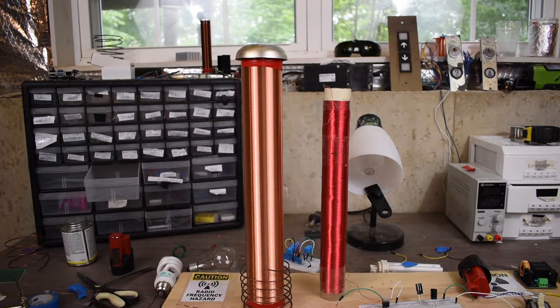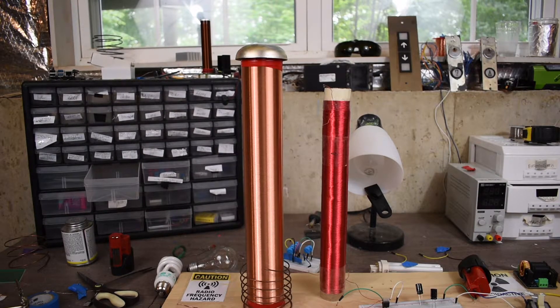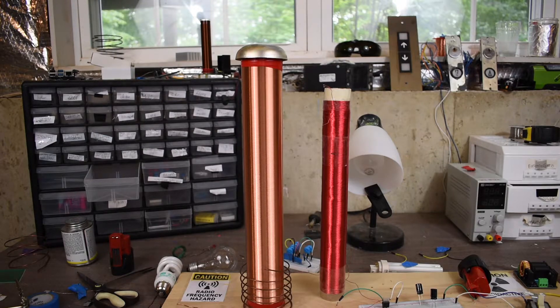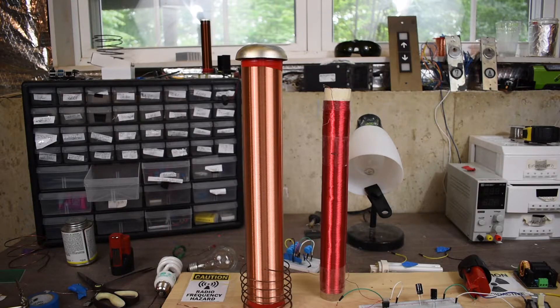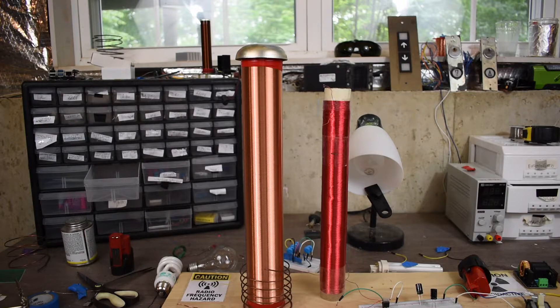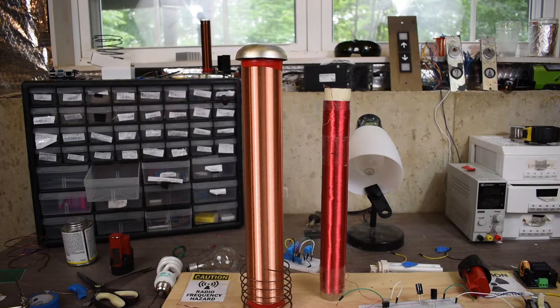My Tesla coil specifically likes around six turns of primary and around a thousand turns of secondary. Now the more turns of secondary, the more powerful your Tesla coil will be. This is basically acting like a transformer. Now a step up transformer, as we all know, the more turns of secondary you have, the higher voltage you're going to get on it. Well this basically works the same with Tesla coils.